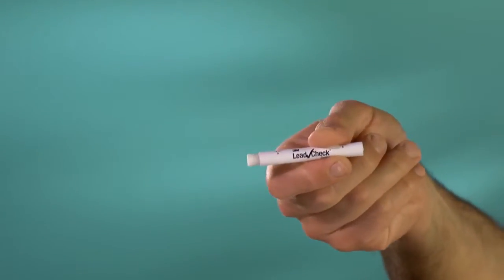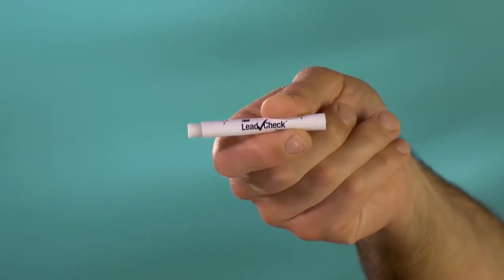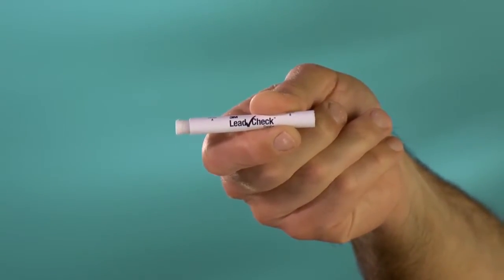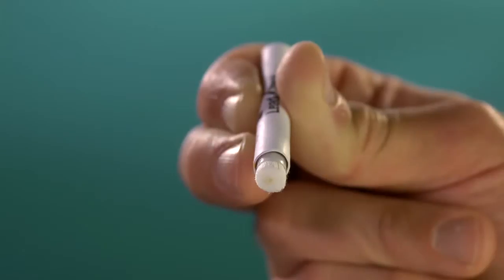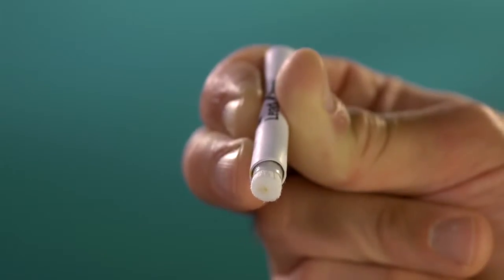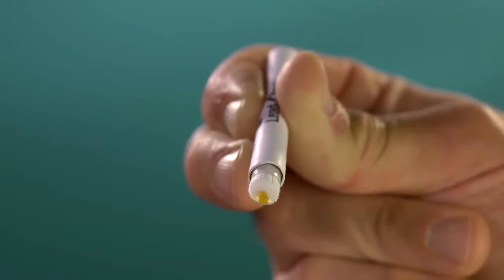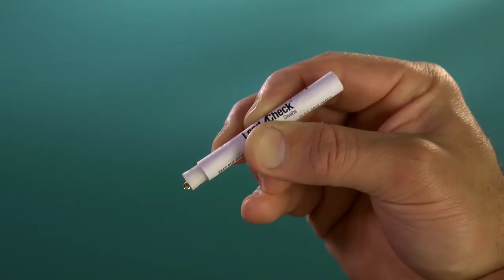Shake the tube vigorously for a few moments to be sure that the chemicals inside have mixed. The 3M LeadCheck swab is now activated and ready for use. Squeeze the tube until you see a bit of the reagent liquid soaking down through the fibers of the swab and appearing at the end of the swab tip.